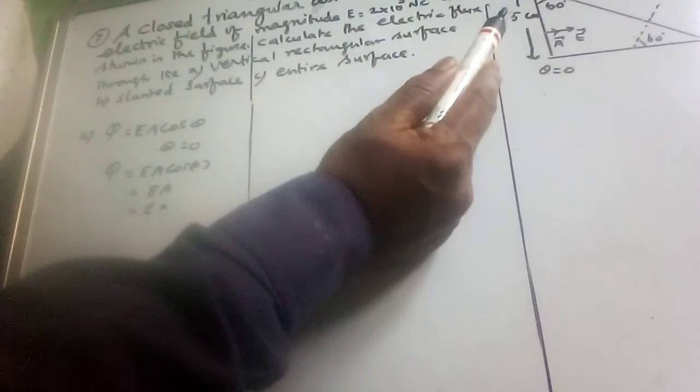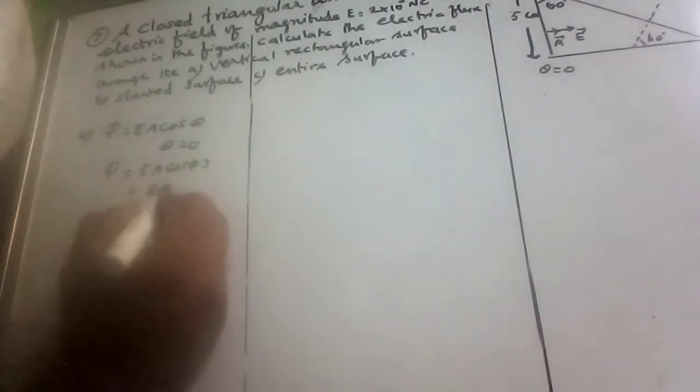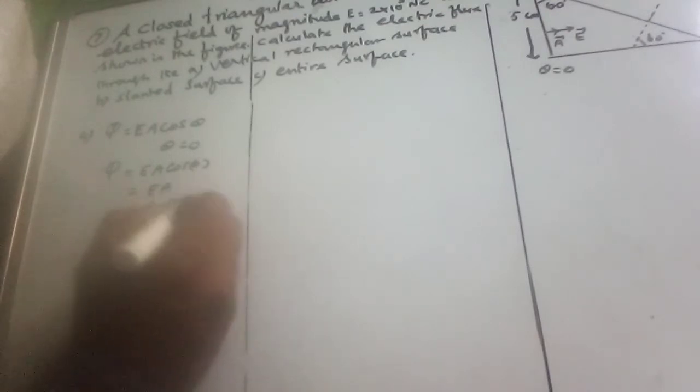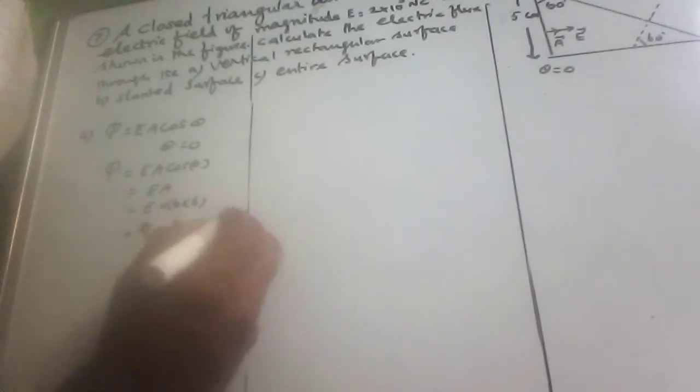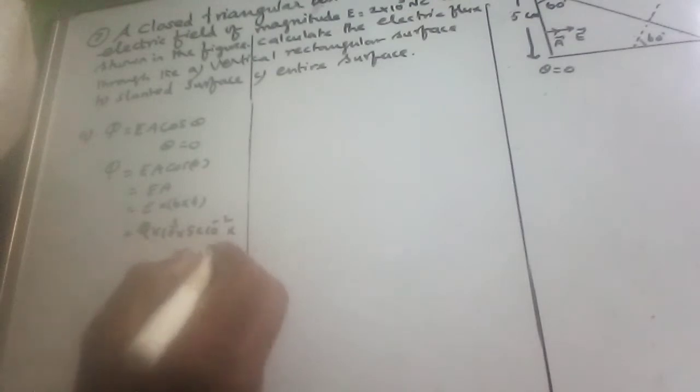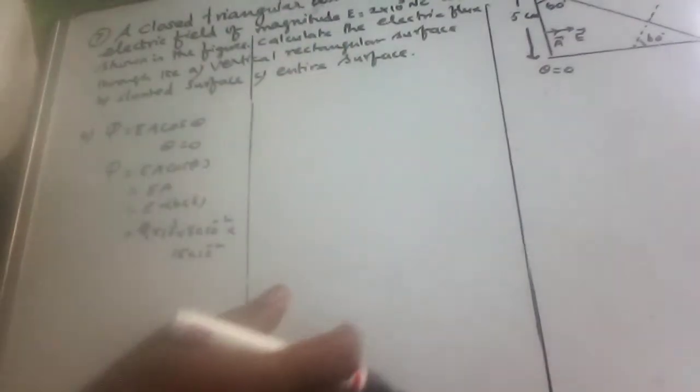Breadth is equal to 5 cm for the vertical surface. Electric field is equal to 2 into 10 power 3. The breadth is 5 into 10 power minus 2 and height is 15 into 10 power minus 2. This is the data from the diagram.